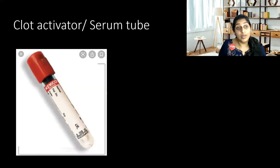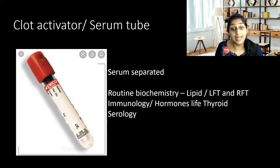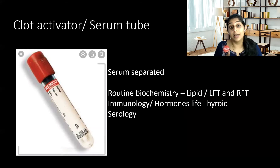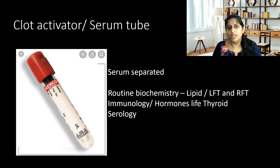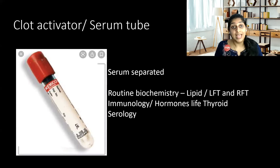The second tube is the clot activator or the serum tube, which is a red colored tube — the most commonly used tube in our laboratory. Here, the serum is separated from the blood, and this tube is mainly used for all the biochemical tests like lipid profile, liver function tests, renal function tests. Apart from that, for hormones like thyroid hormones, estradiol, prolactin — all the hormones we use this. We also use this for immunology like HIV, HBsAg, and HPV. Even for serology, we need the serum, so we use a red colored tube.